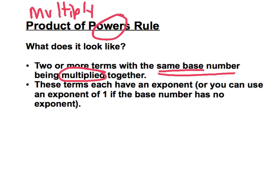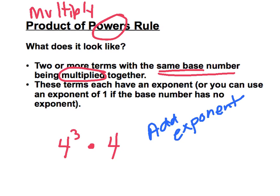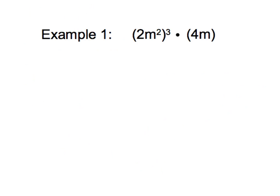Sometimes when there is no exponent, some students like to write the exponent 1 to that base number, so they realize that even though there doesn't appear to be a number there, we always have an exponent of 1. So a problem might look like 4 to the 3rd power times 4 — and in this case, this is when we add our exponents. So 4 to the 3rd power times 4, which means 4 to the 1st, would give us 4 to the 4th power. Now let's work out a couple of examples together where we're combining these two rules.